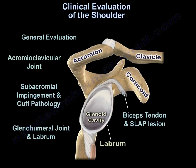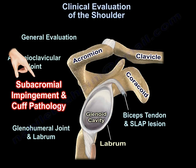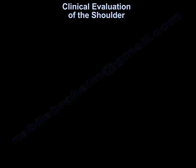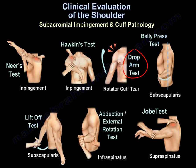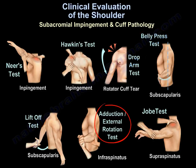For subacromial impingement and rotator cuff pathology, there are multiple tests: the Neer's test and Hawkins test for impingement, the drop arm test for rotator cuff tear, the belly press test and lift-off test for subscapularis tendon weakness and rupture, the adduction external rotation test for the infraspinatus muscle, and Jobe's test for the supraspinatus muscle.